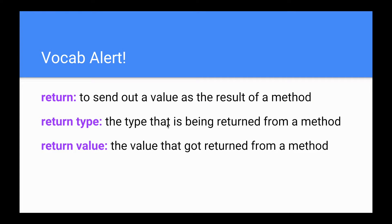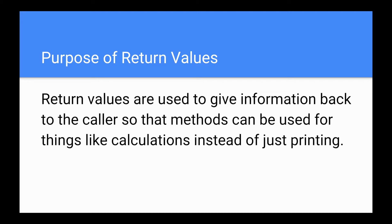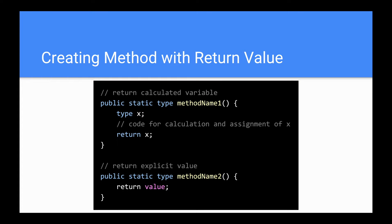Return values. Some vocab: return means to send out a value as the result of a method. Return type is the type being returned from a method, and the return value is the value that got returned. The purpose of return values is to give information back to the caller so that methods can be used for calculations instead of just printing. Creating a method with a return value: it's public static and then the type — this used to always be void, but now if you are returning something, it'll be the type you're returning — then method name. You can do it with a variable: type x, some calculation, then return x. Or return an explicit value like return 1.3.